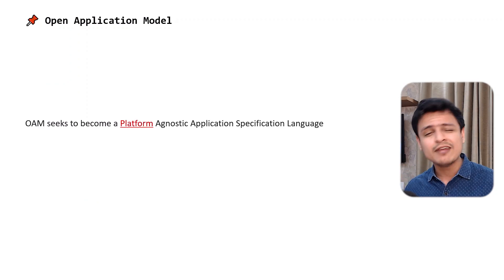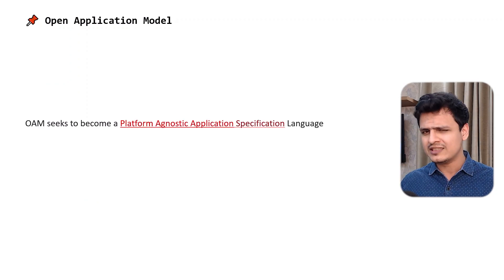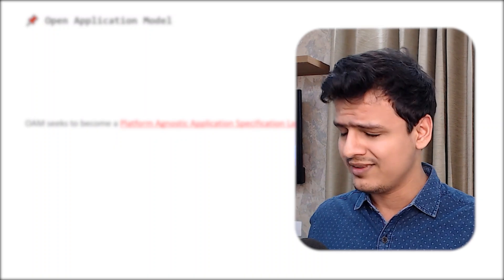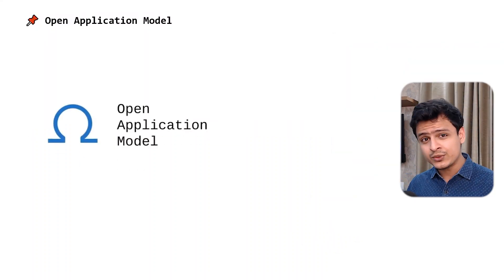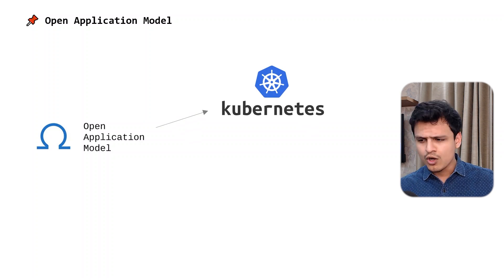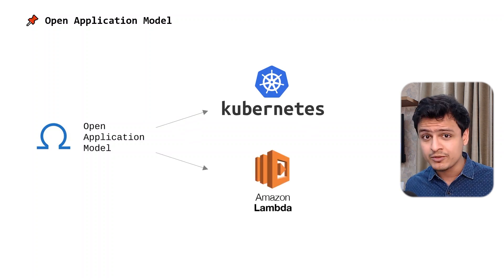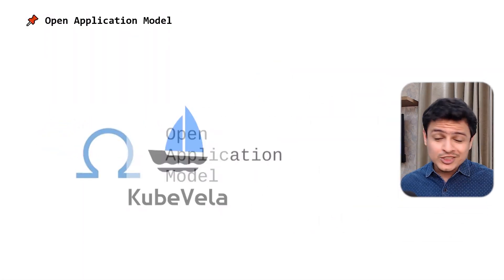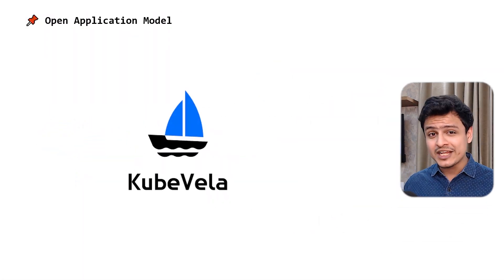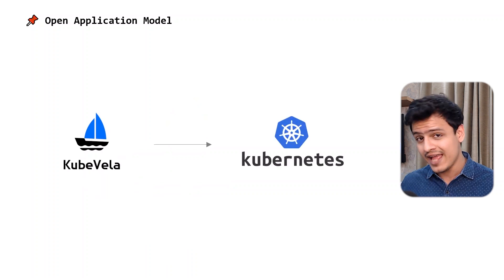It's time to introduce the Open Application Model. Its main objective is to become a platform-agnostic application specification language. Basically, it wants to be the format that you can use to deploy your applications on Kubernetes or even on something like AWS Lambda. But we'll focus on KubeVela, which is an implementation of the Open Application Model for Kubernetes. Let's dive right in.